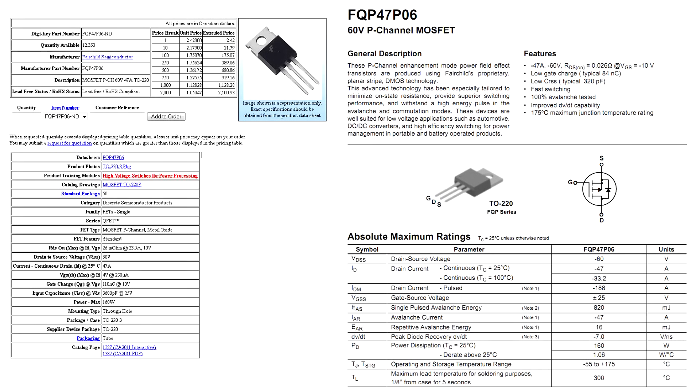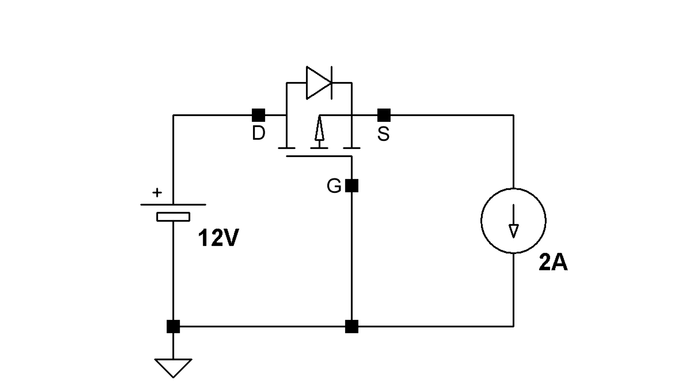First, get yourself a P-channel MOSFET like this FQP47P06. Pay very close attention to which pins are gate, drain, and source. Next, put it in your circuit like this.